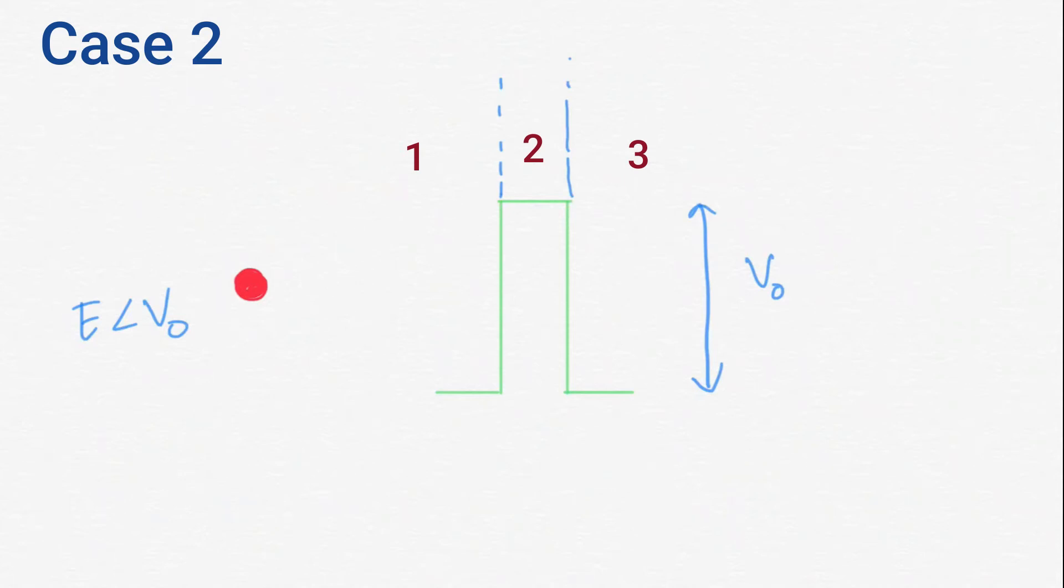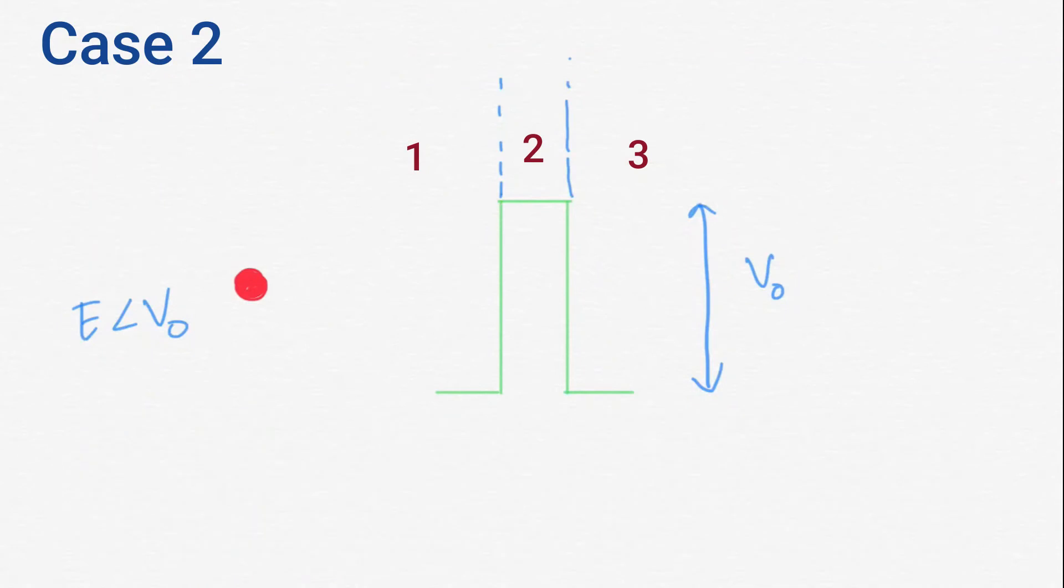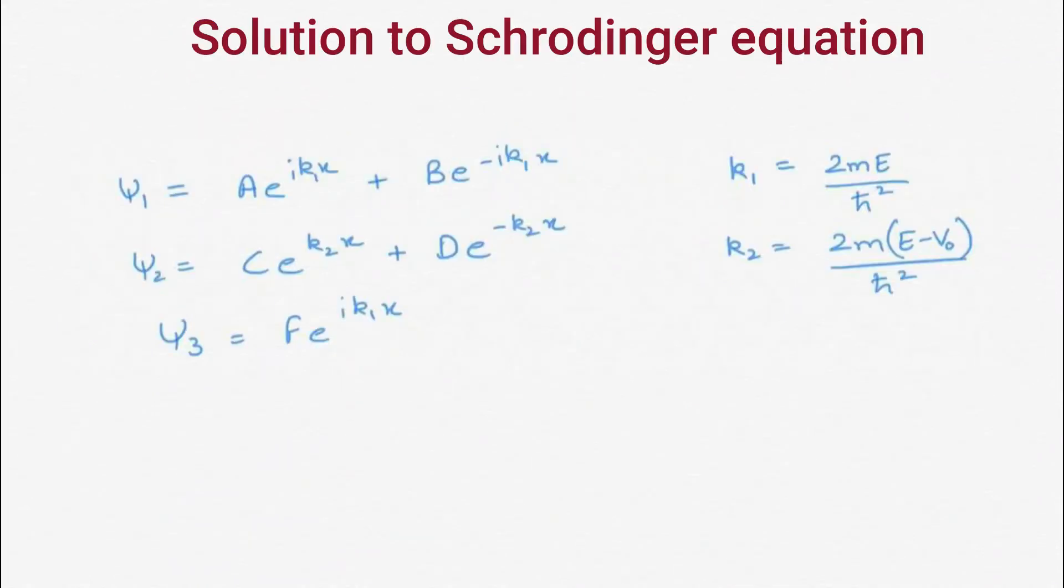I will make a different video on that in the future. But if you are curious how we will calculate the wave function, you can see my video on finite 1D potential well for reference. It has almost the same type of calculation. So on doing calculation using Schrödinger equation we get wave functions of this form in the three regions.